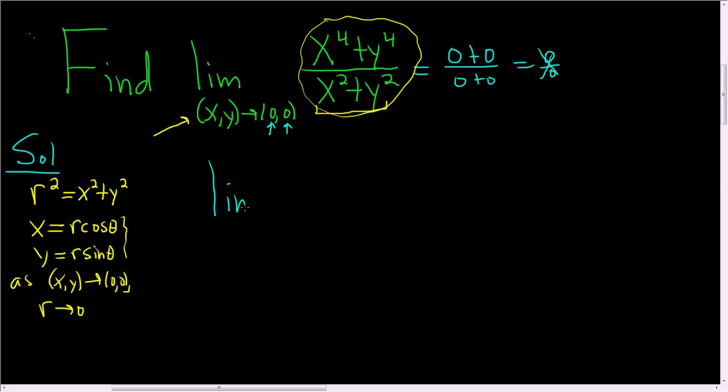So the limit as r approaches 0. And in the numerator, we have x to the 4th and y to the 4th. So let's use these formulas here for that. So this will be r cosine theta to the 4th plus, and then y is r sine theta. So this is r sine theta to the 4th. And in the denominator, we have x squared plus y squared. But that's simply r squared.